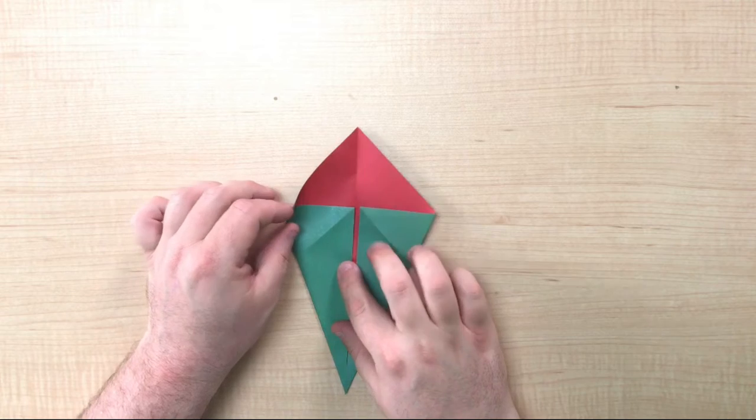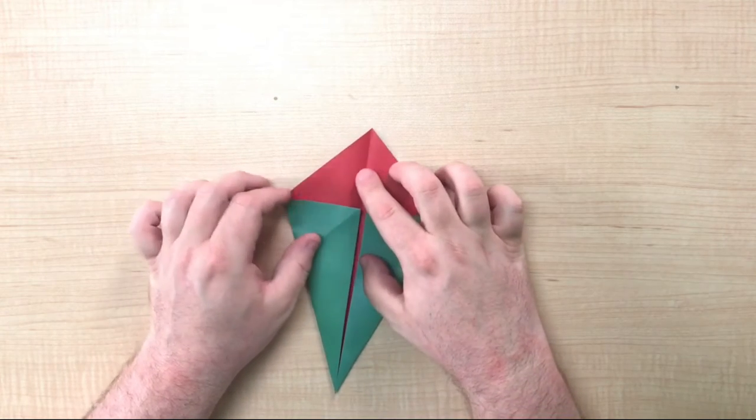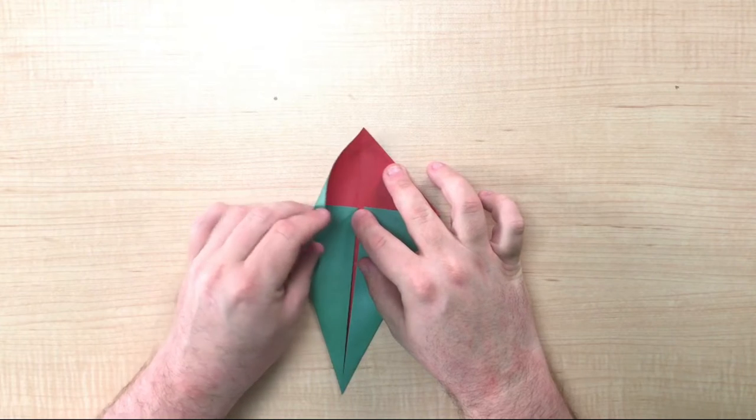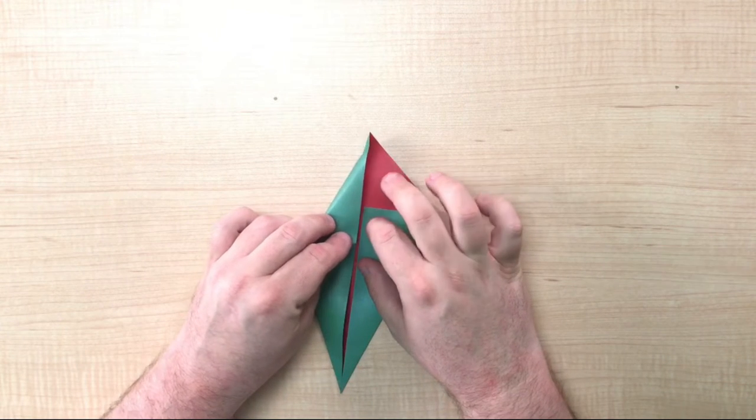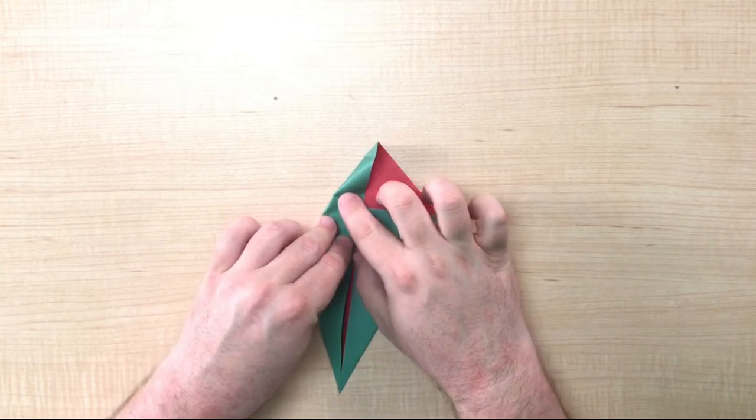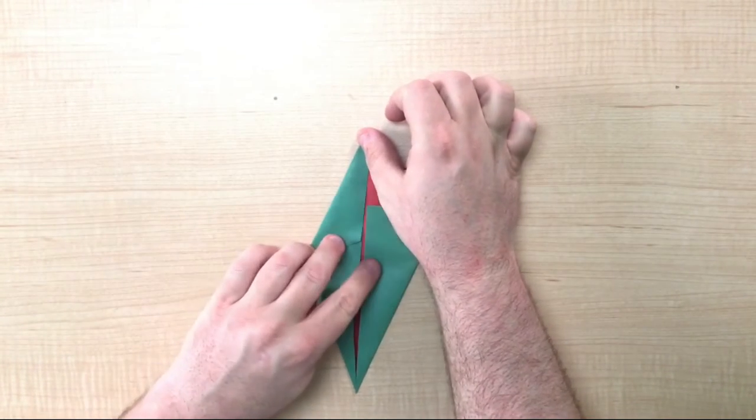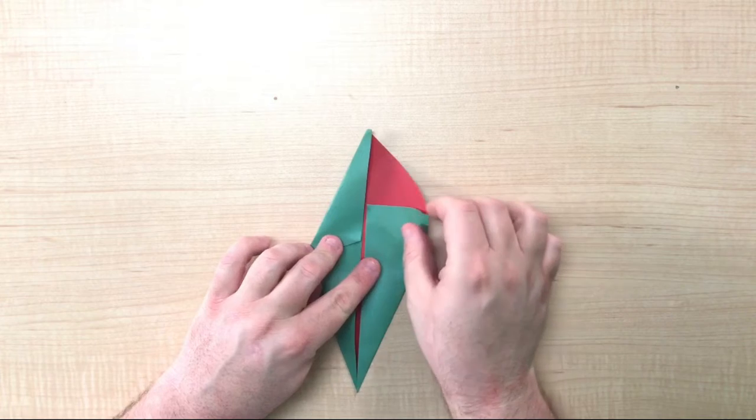Next, take the left point and fold it in so that it touches the center, but this time so that it is the top left side coming into the center, and fold. Then repeat on the right.